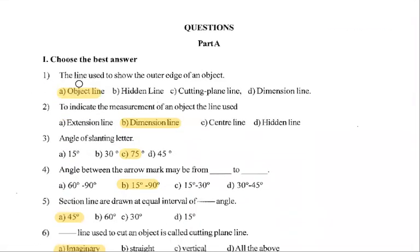Next, lines use to show the outer edge of the object. Outer edge - dimension line, cutting plane line.